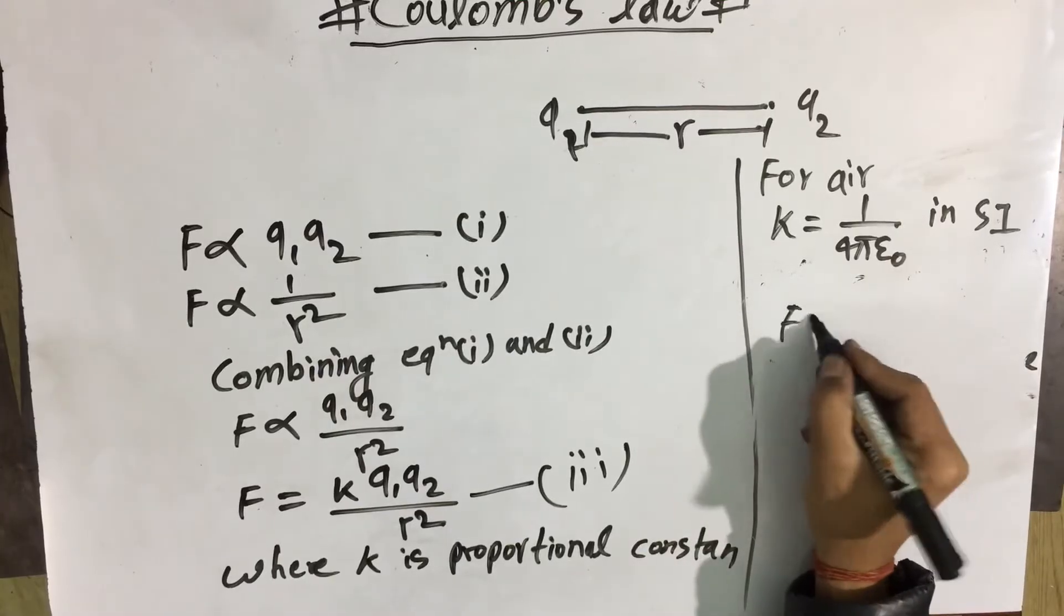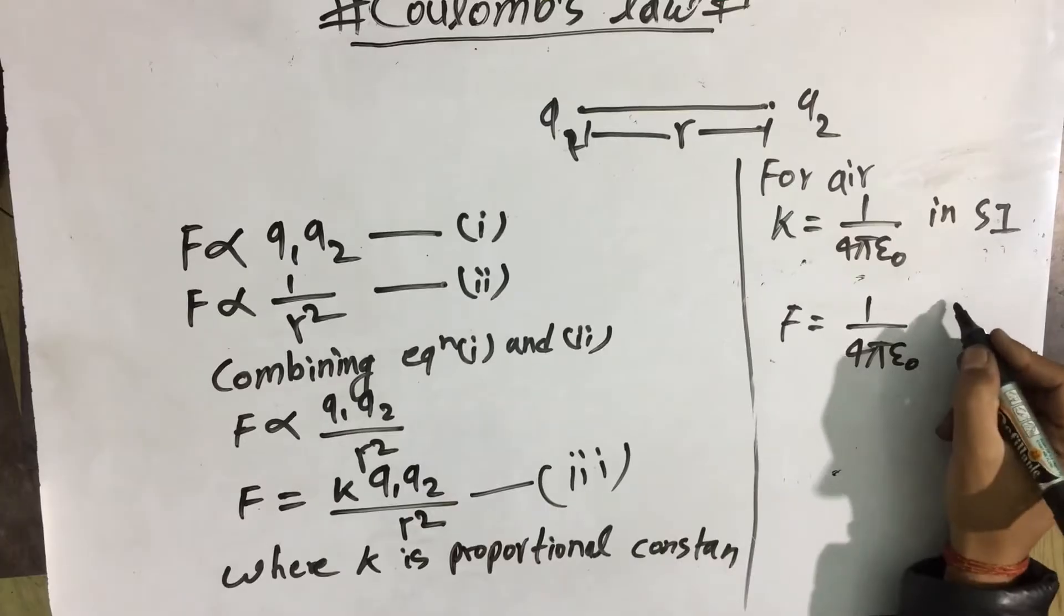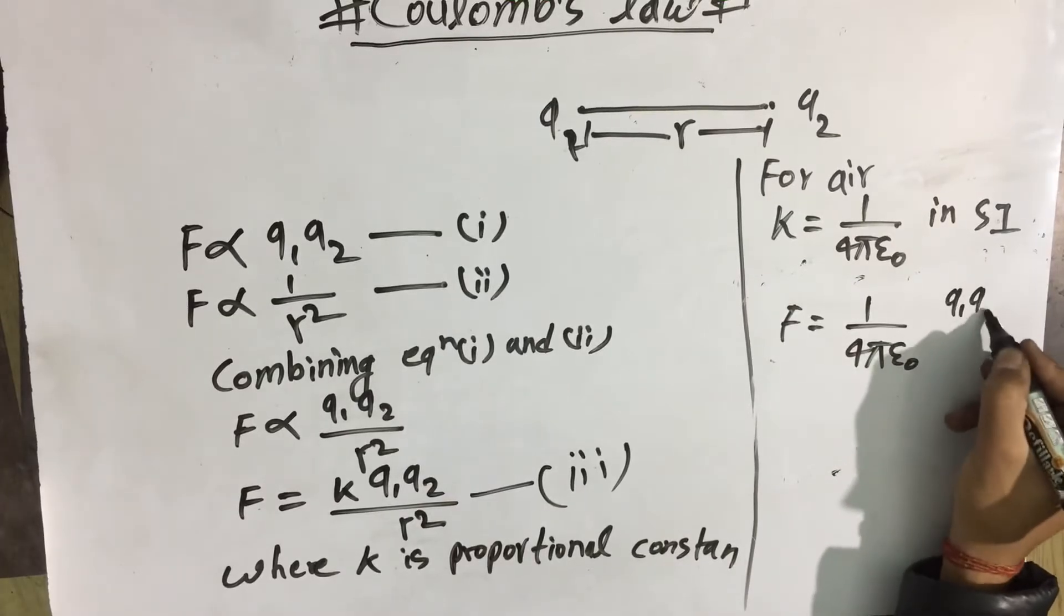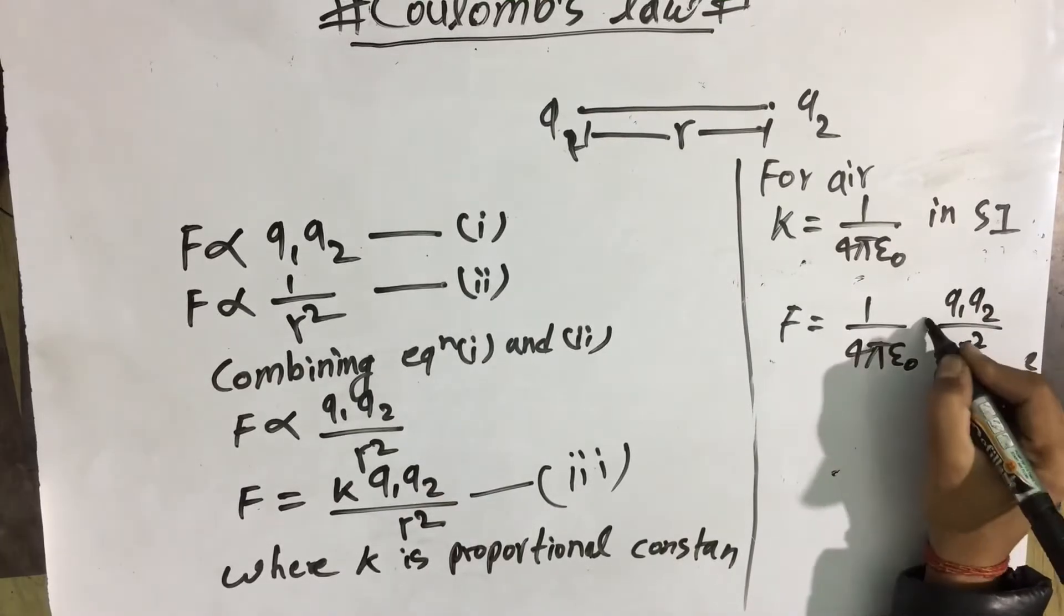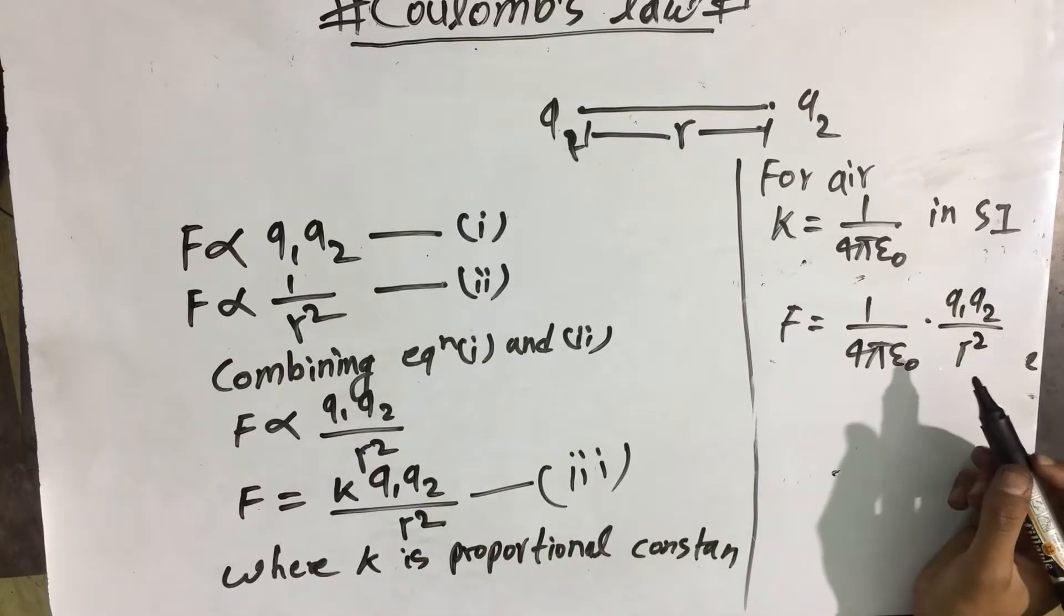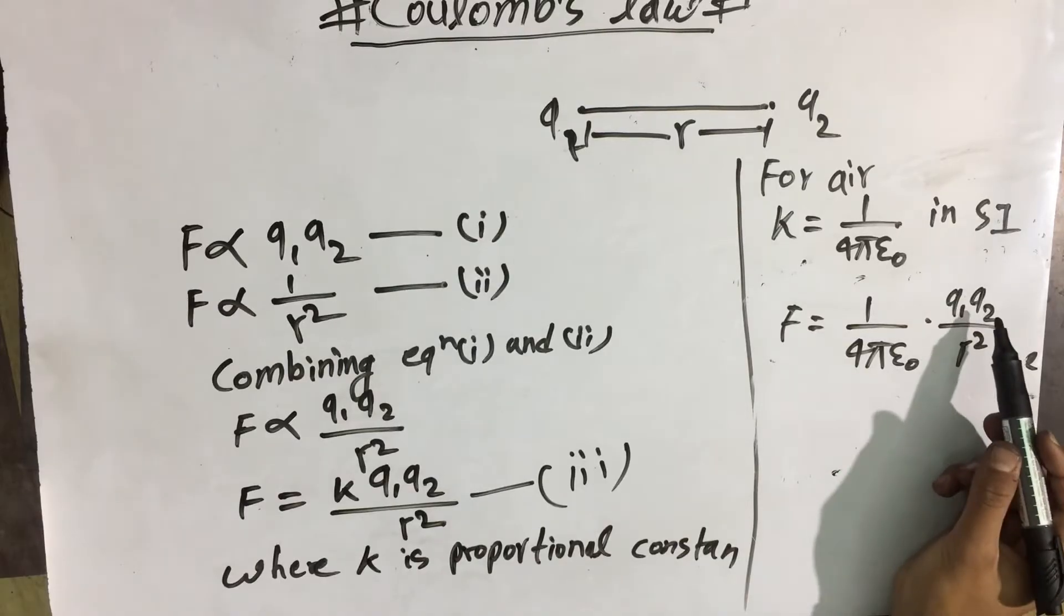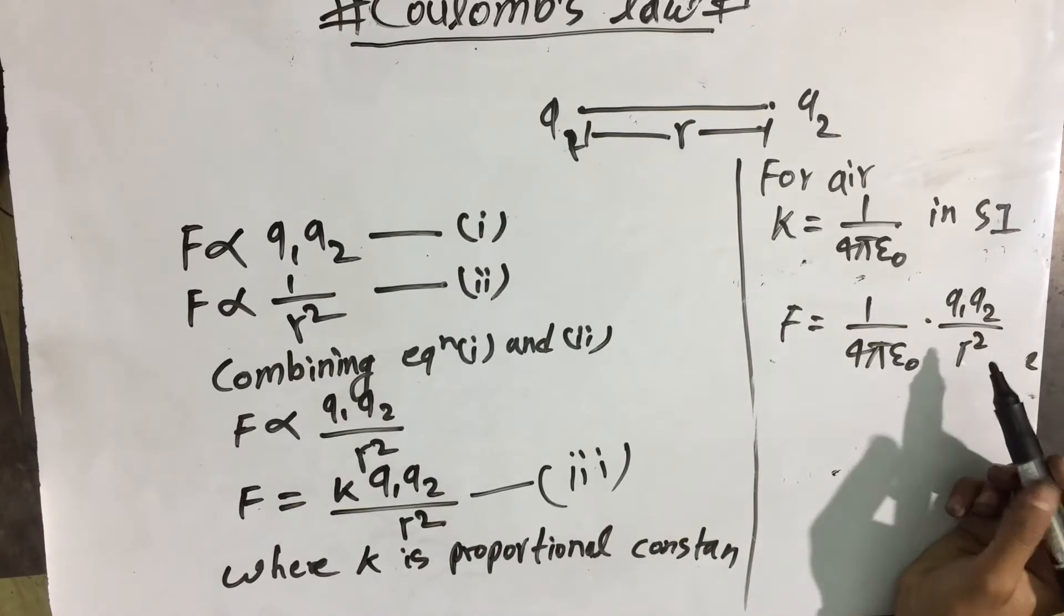F is equal to 1 by 4 pi epsilon naught q1 q2 by r square in SI system.